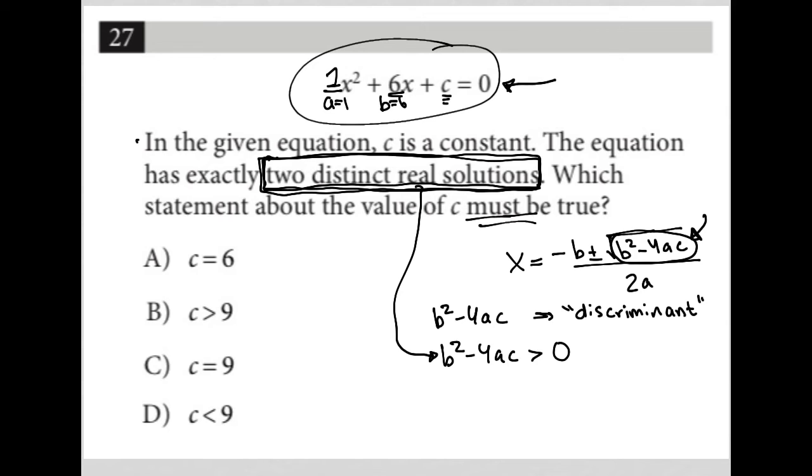So B squared would turn into 6 squared minus 4. A is just 1, and then C stays as is, greater than 0. 6 squared is 36. This whole thing simplifies into 4C, greater than 0.